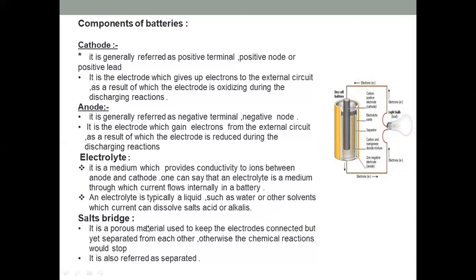Next, salt bridge. The four components are: first, cathode; second, anode; third, electrolyte; fourth, salt bridge. The salt bridge is a porous material used to keep the electrodes connected but separated from each other. Otherwise, the chemical reaction would stop.